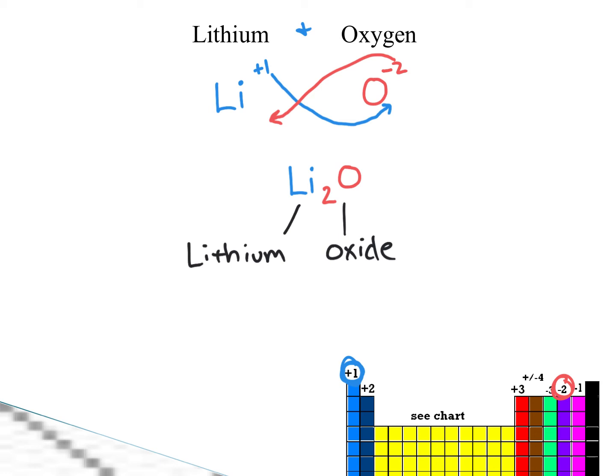Lithium remains lithium. It gets to keep that. The oxygen, it has to change its name. So oxygen is going to get that IDE ending. So oxygen becomes oxide. Lithium oxide. And this is our crisscross method.